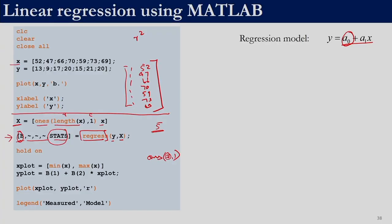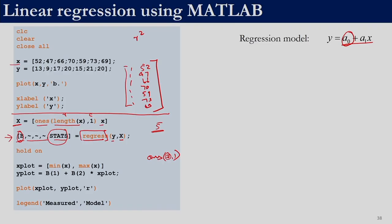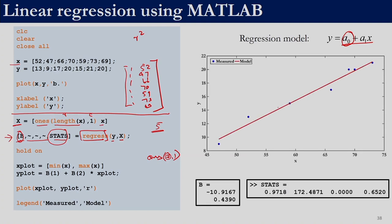Once we have obtained the coefficients from regress, we also want to plot the fitted line. As we saw previously with Anscombe's data, for simple linear regression it is always a good idea to look at the plot rather than merely relying on the R² value. We want to display both the data points and the straight line on the same plot.